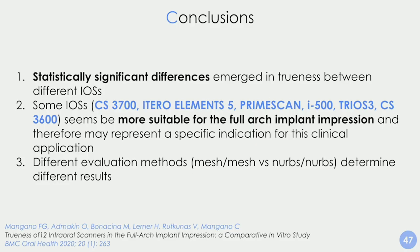The conclusions of this study are: there are statistically significant differences in trueness between different scanners. Some scanners are more suitable for full arch applications — specifically the two Carestream scanners, iTero Element 5, PrimeScan, Medit, and TRIOS 3. These appear most suitable for full arch implant impression and may represent a specific indication, because they are intrinsically better than the others in this specific application.